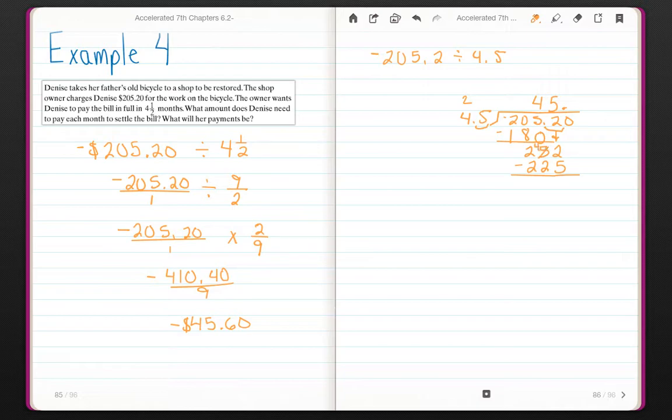Subtract 12 minus 5 is 7. 4 minus 2 is 2. Bring down the 0. 45 goes into 270 six times. 6 times 5 is 30. 4 times 6 is 24, 25, 26, 27.